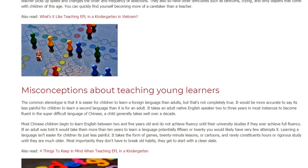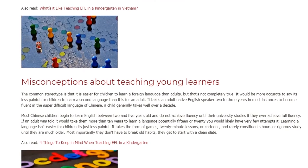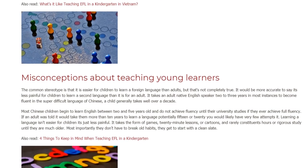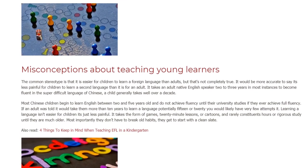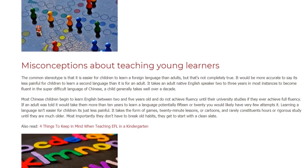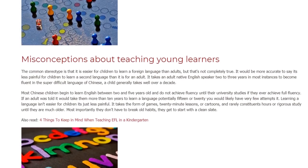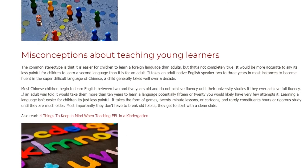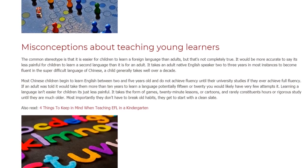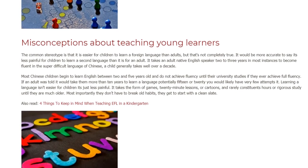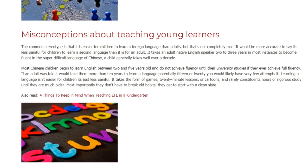The common stereotype is that it is easier for children to learn a foreign language than adults, but that's not completely true. It would be more accurate to say it's less painful for children to learn a second language. It takes an adult native English speaker 2 to 3 years in most instances to become fluent in a super difficult language like Chinese, while a child generally takes well over a decade.